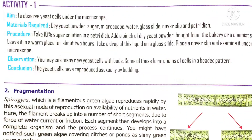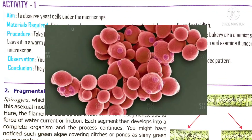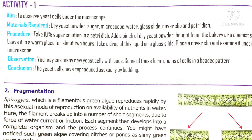Activity one also states that if you observe yeast cells under a microscope, you can see the outgrowth on the cell called buds. Thus yeast produces new individuals by the process of asexual budding.